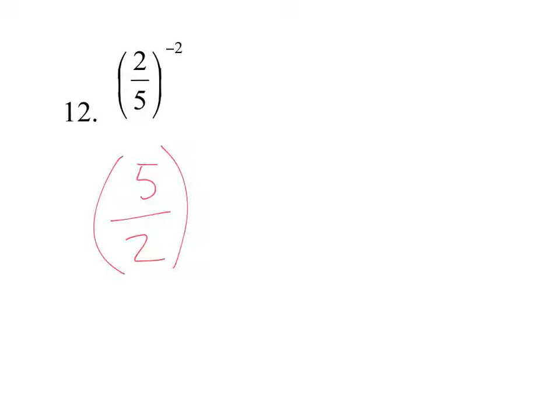Leave it in parentheses. We'll change the negative 2 to a positive 2. And then we're going to do the second power to both of these. So this is actually 5 to the second power over 2 to the second power. 5 to the second power is 25.